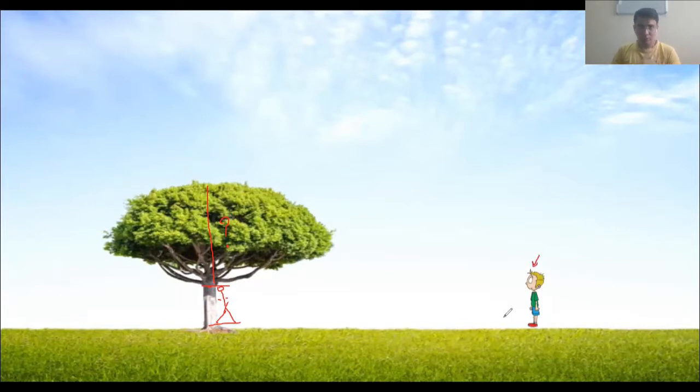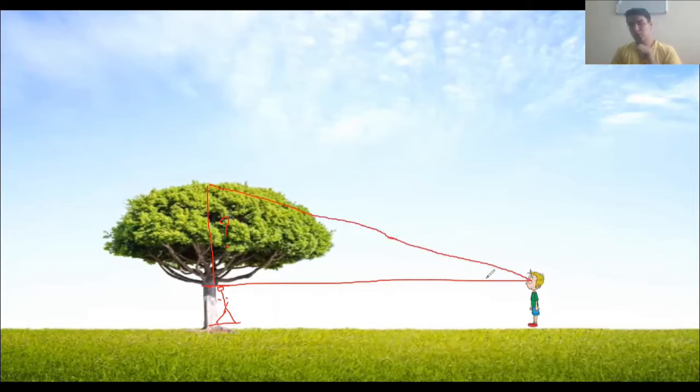So let us try to find out what else information do you have. Let us go back here. Imagine you are standing here again. This much height we know, whatever is the height. If I'm looking at the top of the tree, what shape is it forming? Yes, you are absolutely correct - it is a right angle triangle.